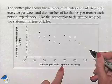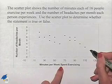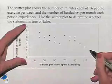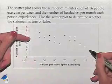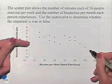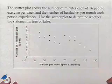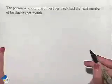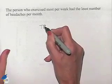Now the next part of the question is asking whether or not that person had the least number of headaches. To have the least number of headaches, we'd have to be the furthest down vertically, and we can see that this point does correspond to that. So our answer to this statement is that it's going to be true.